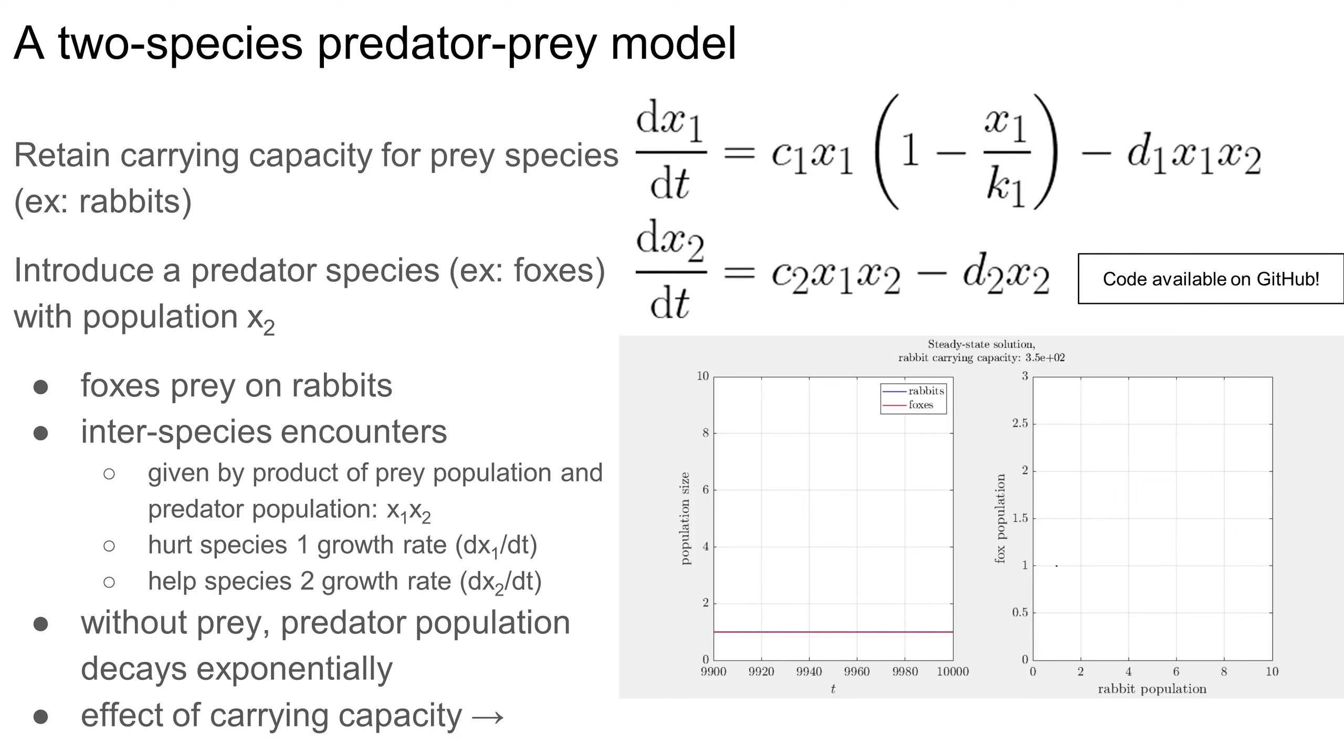At low carrying capacities, the predator and prey populations settle down to constant levels. However, as the carrying capacity gets bigger, the populations begin to oscillate. Let's start with the rabbit population. When the carrying capacity is large, the rabbit population grows rapidly, supporting an increasingly large fox population. Once the fox population is big enough, predation drives the rabbit population back down rapidly. As this happens, there is less food available to sustain the fox population, so it also declines. Once the fox population is small enough, the rabbit population begins to recover, and the cycle repeats.